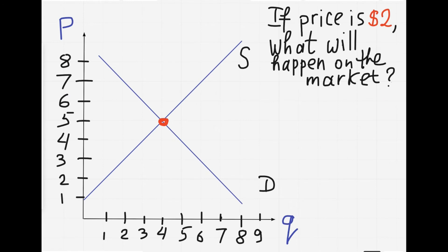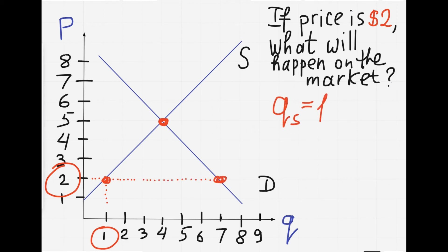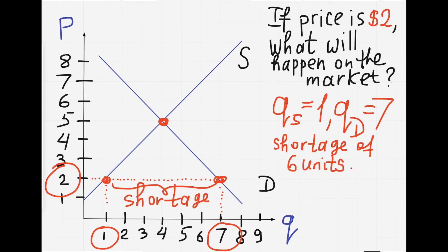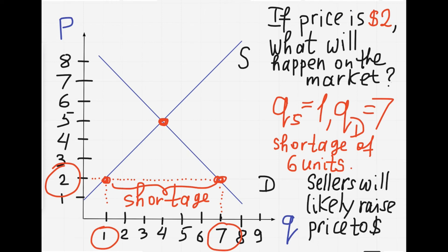Here is a similar question. If the price is $2, so that it's below the equilibrium level, what will happen on the market? At the price of $2, the quantity that sellers want to sell equals 1, but the quantity that buyers want to buy — quantity demanded — equals 7. So sellers want to sell less than buyers want to buy. There is too little produced. There is a shortage — a shortage of 6 units. And to fill up this shortage, sellers will likely raise the price from $2 to $5, at which the market will clear.